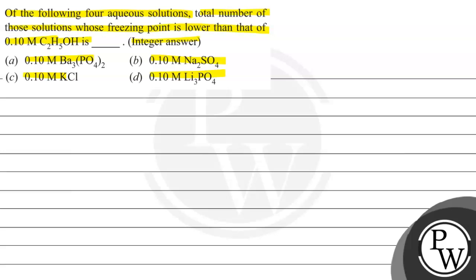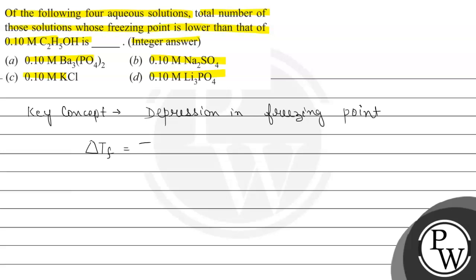The key concept of this question is depression in freezing point, which states that when we add a non-volatile solute to a solution, the freezing point is lowered. This depression in freezing point can be represented by delta Tf, which equals Tf0 minus Tf, where Tf0 is the freezing point of the pure solvent and Tf is the lowered freezing point of the solution.